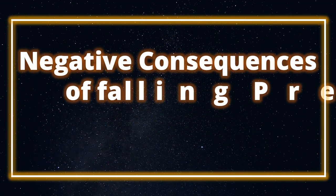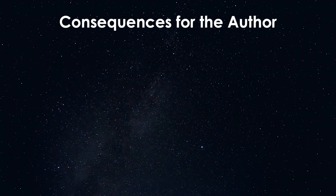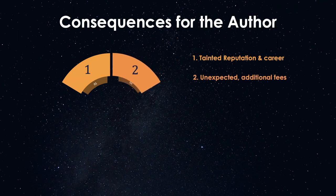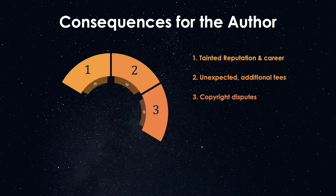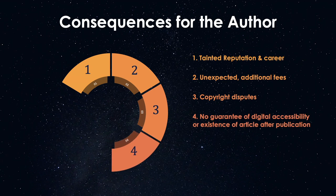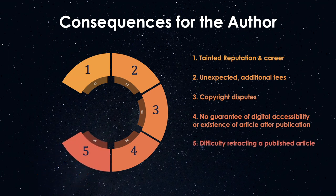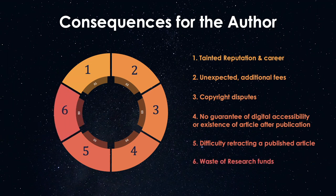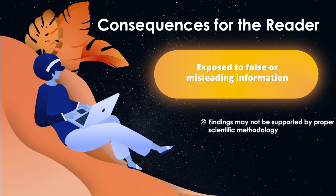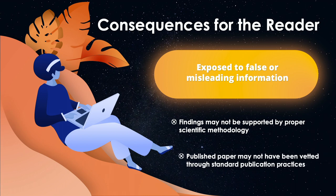Now we will look at some negative consequences of falling prey to predatory publishing. Some negative consequences for the author include gaining a tainted reputation and career which can negatively impact funding decisions, hiring, and promotion opportunities; being subject to unexpected additional processing fees; experiencing copyright disputes with the publisher; having no guarantee that the published research will remain digitally accessible or continue to exist sometime after publication; experiencing difficulty retracting a published article and having it published in a legitimate journal; and lastly, wasting research funds. Those who read articles from predatory journals may also be exposed to false or misleading information, because the findings of the paper may not be supported by proper scientific methodology, or because the published paper may not have been vetted through standard publication practices.